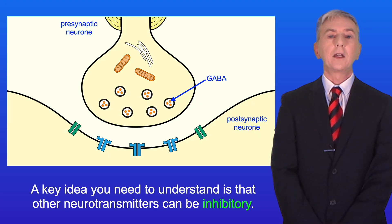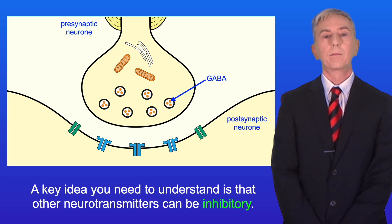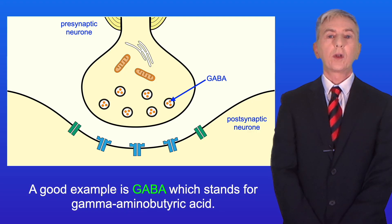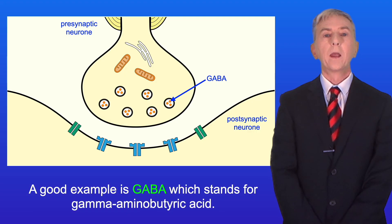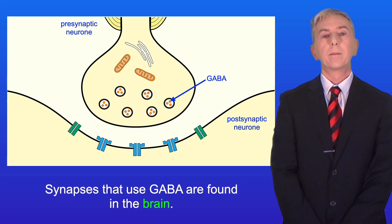A key idea you need to understand is that other neurotransmitters can be inhibitory. A good example is GABA, which stands for gamma amino butyric acid. Synapses that use GABA are found in the brain.